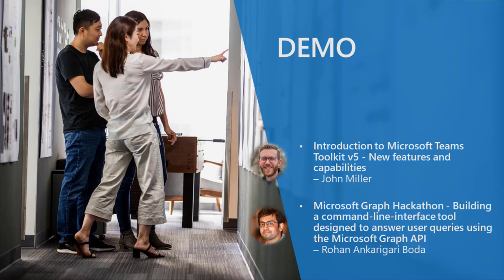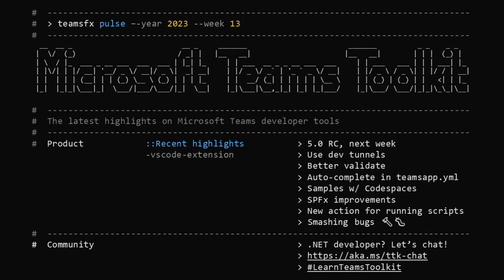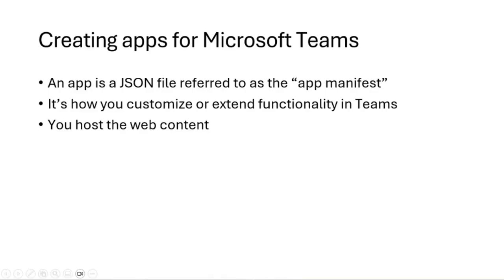Thanks, Vesa. I'm going to talk about developing apps for Teams using the Teams Toolkit. I want to give a little introduction to creating apps in case you're new. An app on Teams is really just a JSON file — we refer to that as the app manifest. This confused me when I first got started coming from a mobile development background, where I thought app meant IPA files and APKs. But in Teams and Microsoft 365, it's really this JSON file that defines how you want to extend.